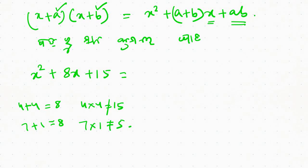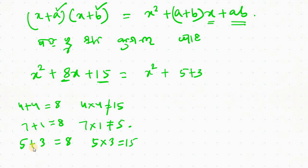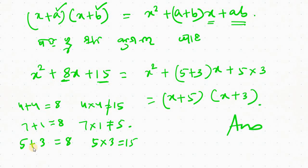So if we add 5 plus 3, that gives 8, and 5 into 3 gives 15. Then multiply to get 15. So x squared plus 8x plus 15. We take the formula: x plus 5, all into x plus 3.